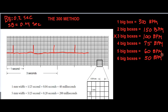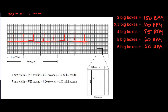So we have these six numbers: 300, 150, 100, 75, 60, 50. Please commit these to memory. To find the heart rate, count big boxes from one QRS and call out the sequence: 300, 150, 100, 75, 60, 50. For example, counting six boxes gives 50 beats per minute. On another EKG, counting to three boxes gives 100 beats per minute. It all depends on memorizing these numbers.